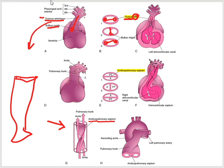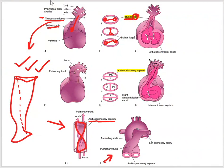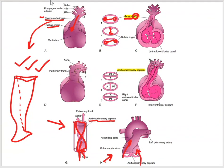The aorticopulmonary septum should exist in the middle and be spiral — rotating about 180 degrees on itself. That is why in the adult the pulmonary trunk is anterior and the aorta goes posteriorly. They are separated from each other by the aorticopulmonary septum. Now let us explain three defects: if this septum does not exist, if it is not in the midline, or if it is not spiral.